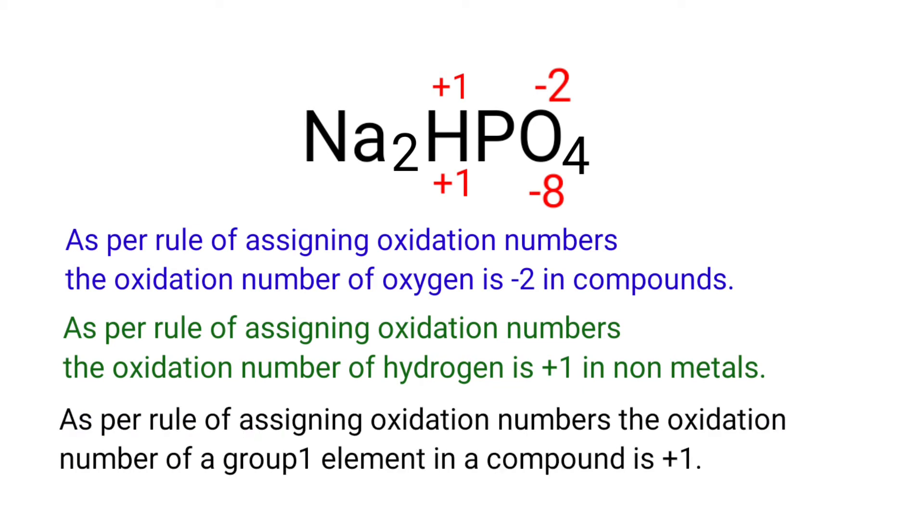As per rule of assigning oxidation numbers, the oxidation number of a group one element in a compound is plus one. Sodium is a group one element, so the oxidation number of sodium is plus one.